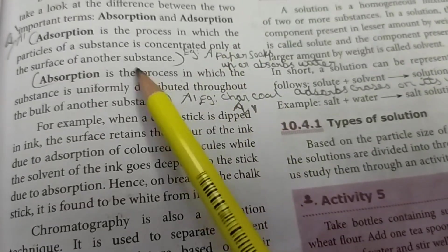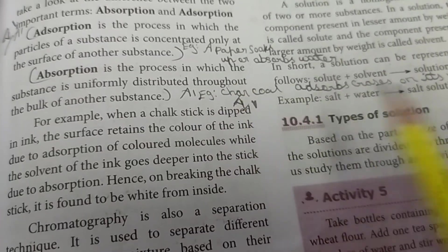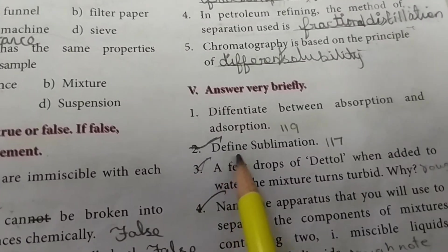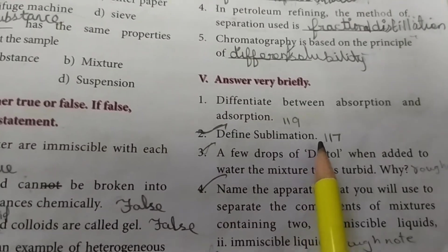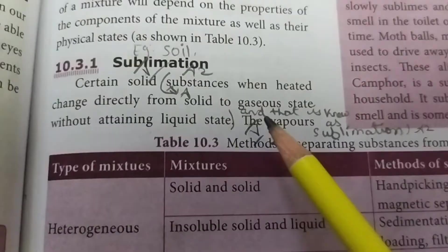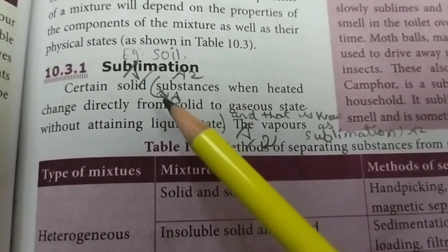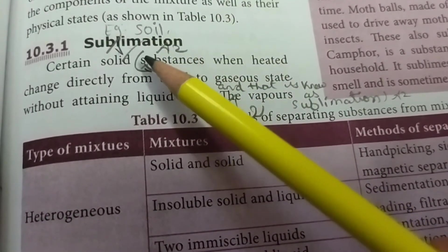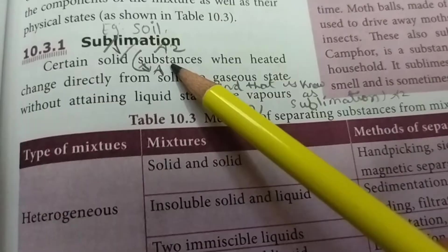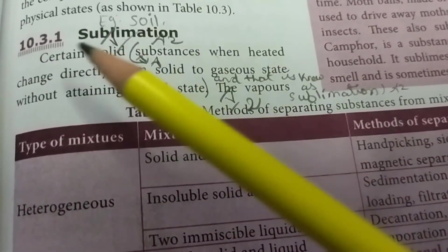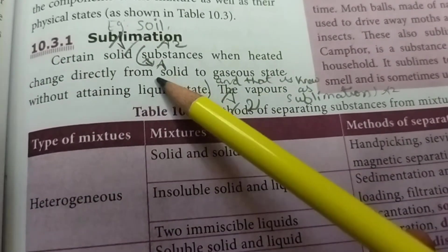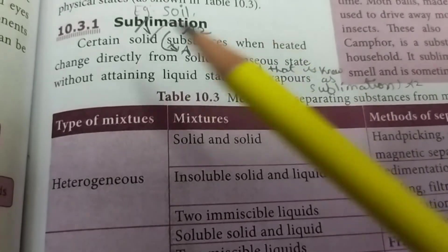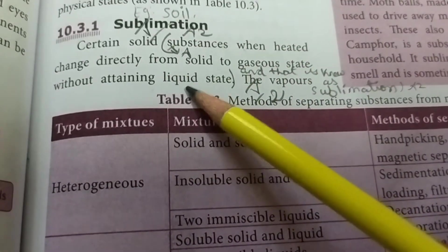Second question: Define sublimation. Take page number 117. Sublimation: When substances are heated, they change directly from solid to gaseous state without attaining liquid state, and that is known as sublimation.